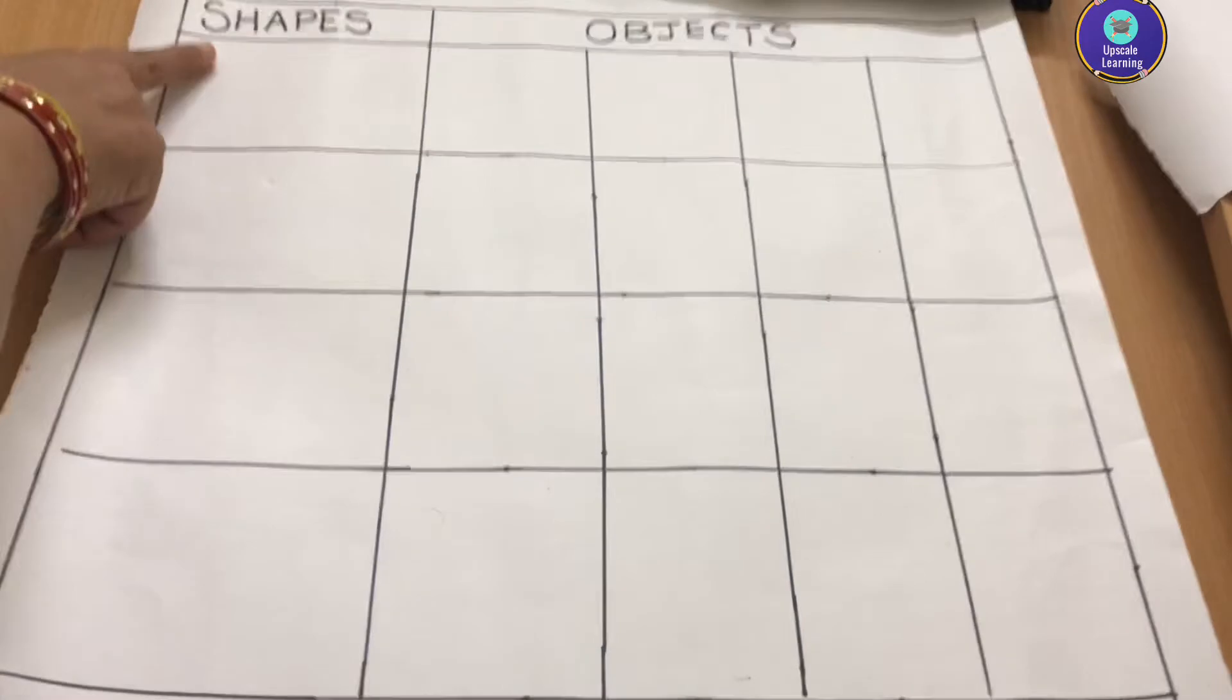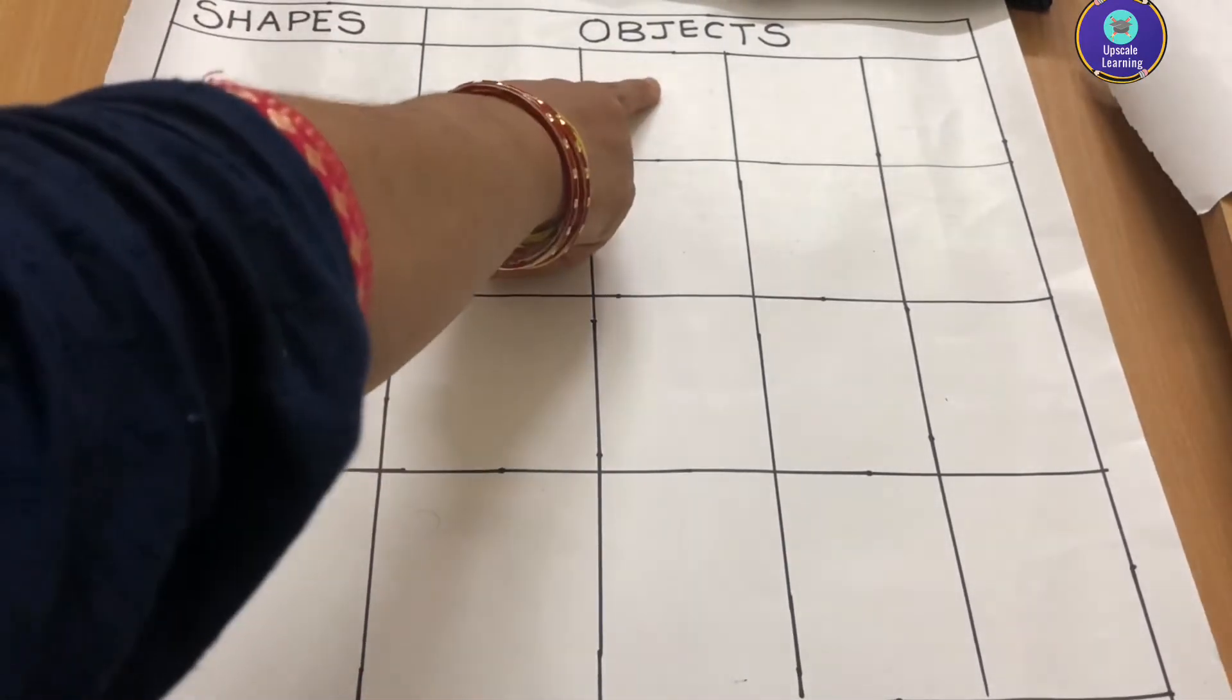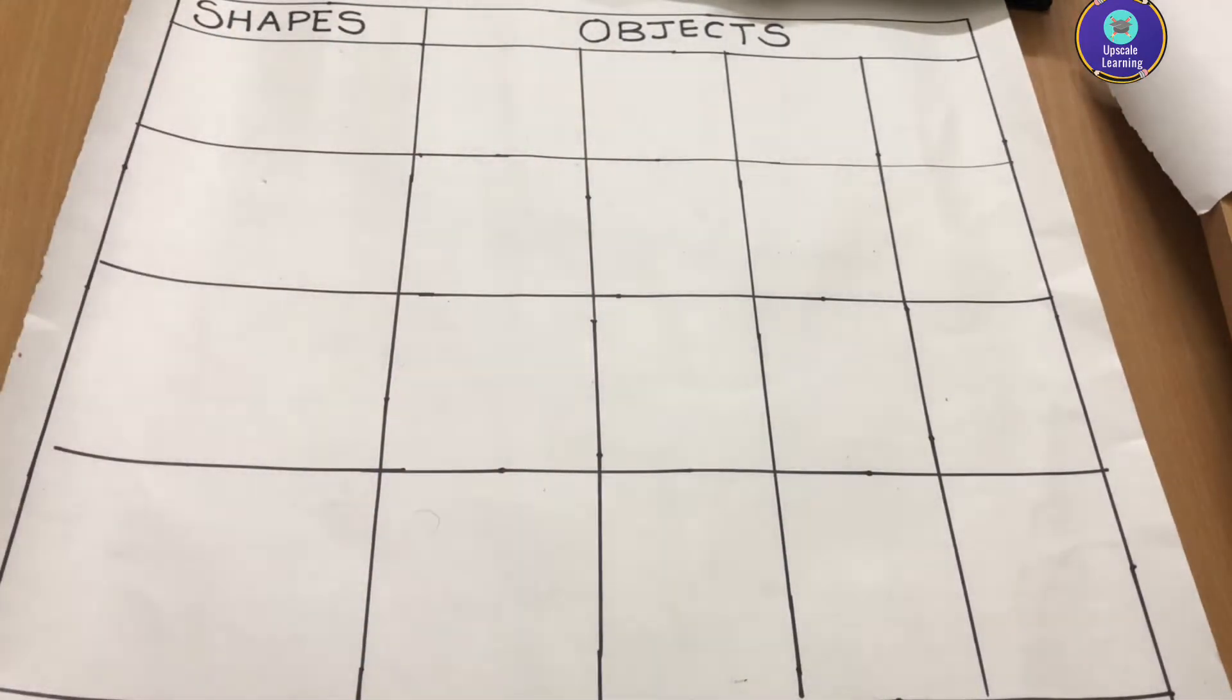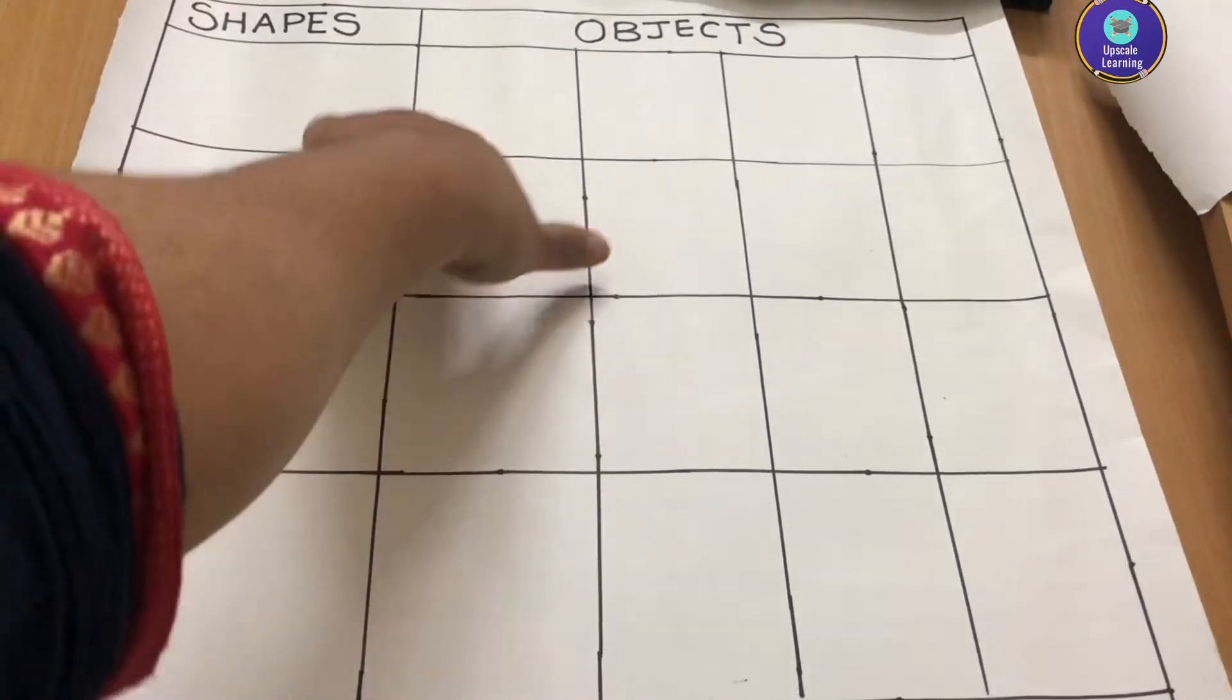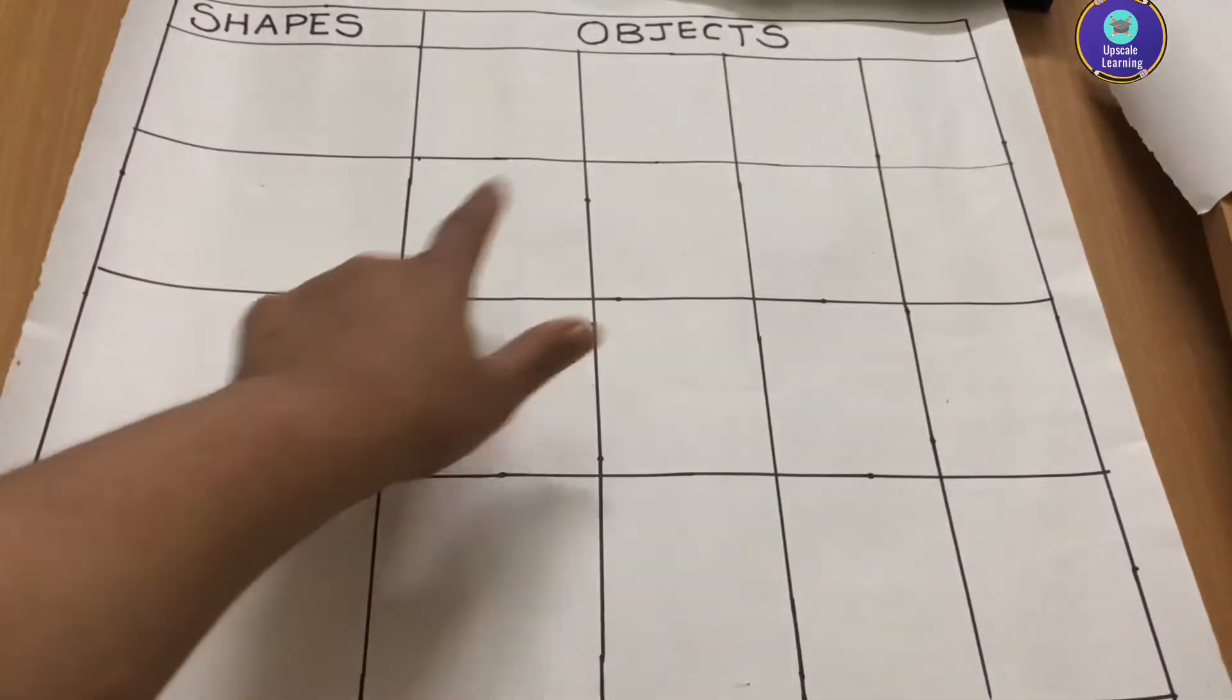So I am going to take different shapes on this side and different objects on the right hand side. I have made one row for the shapes and four different rows for objects.